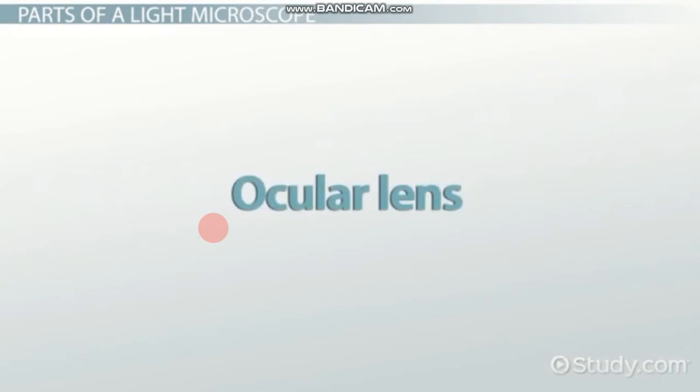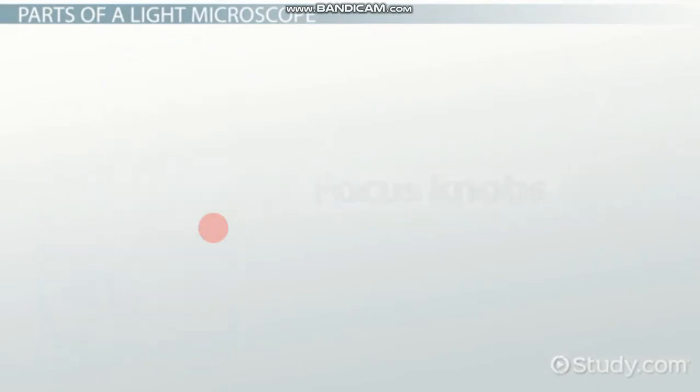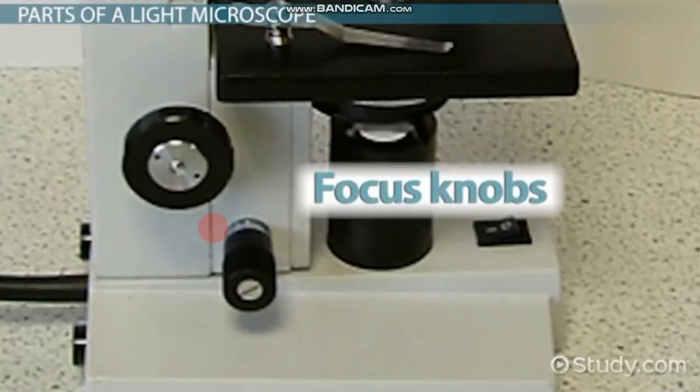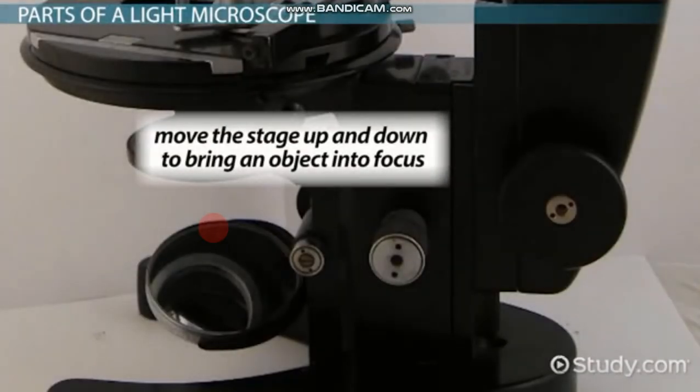The ocular lens is also called the eyepiece. This is the final lens and magnification step before the image reaches the user. Focus knobs generally include coarse and fine adjustment knobs. These move the stage up and down to bring an object into focus.